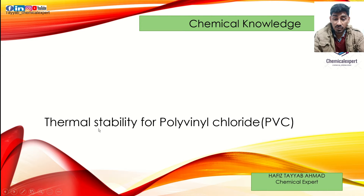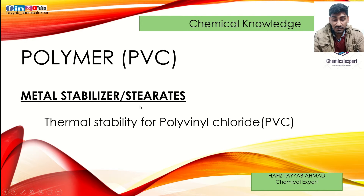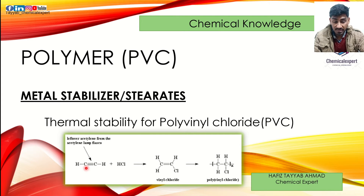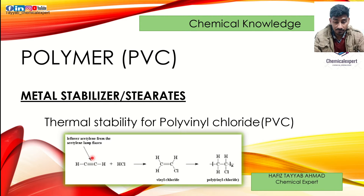Many people ask why we need thermal stability in PVC. First of all, carbon — the element in PVC — has a tendency to form four bonds. Because the outermost shell of carbon contains four bonds, carbon needs four bonds to stabilize itself according to the octet rule. If carbon makes three bonds, as in ethyne, one bond is left for hydrogen, making carbon stable.